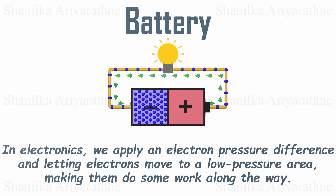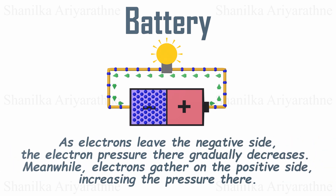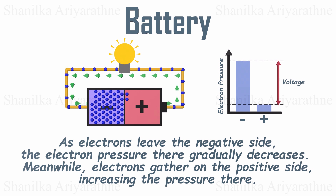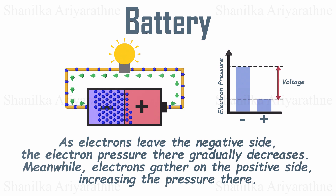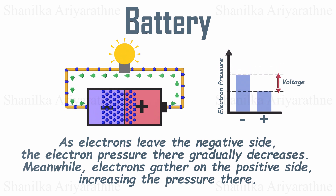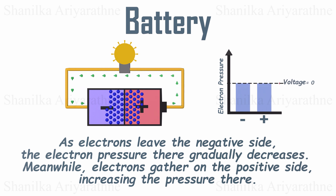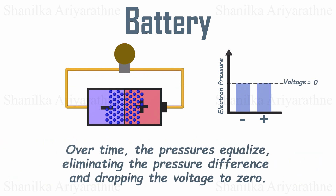Now you may wonder, how long does this electron movement last? As electrons leave the negative side, the electron pressure there gradually decreases. Meanwhile, electrons gather on the positive side, increasing the pressure there. Over time, the pressures on both sides equalize, eliminating the pressure difference. When this happens, the voltage drops to zero, and we say the battery is dead.